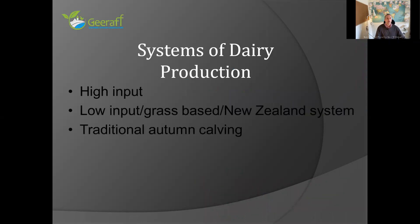What are those systems of dairy production? Well, there are three predominant systems. There's high input, high output milk production. There's low input, low output — also called the grass-based or New Zealand system. And then there's the traditional autumn calving system. I'm going to detail those in each of the next slides.